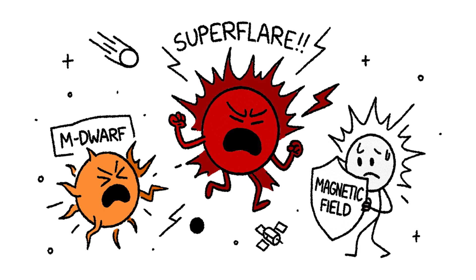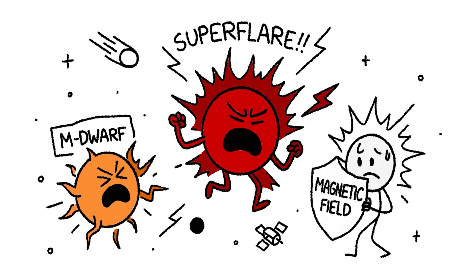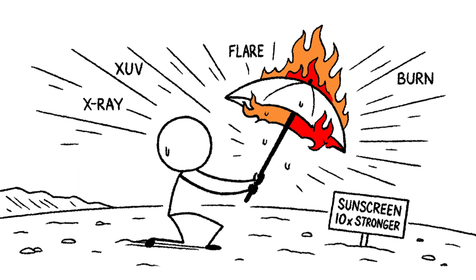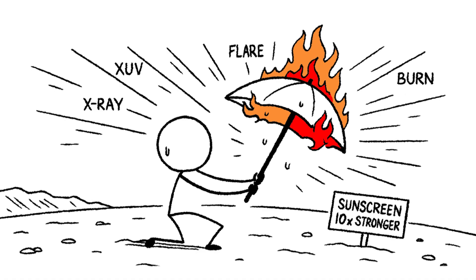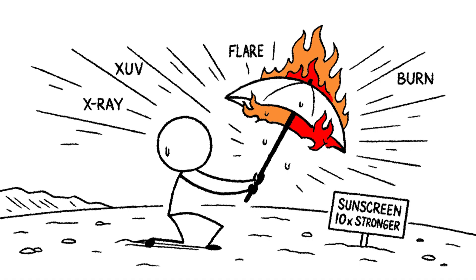They are both classified as active stars. M dwarfs are infamous for throwing cosmic tantrums known as super flares. These stellar eruptions can be 10 times more potent than anything our sun produces, generating lethal bursts of extreme ultraviolet, XUV, and X-ray radiation.